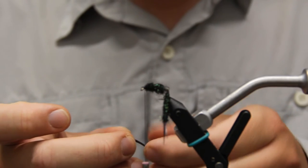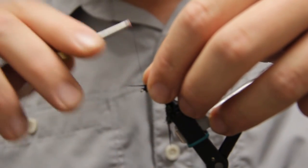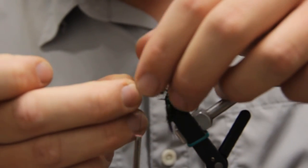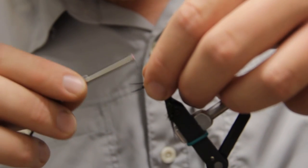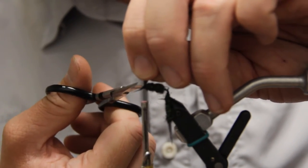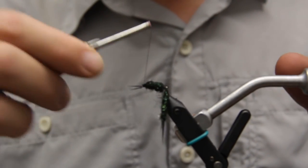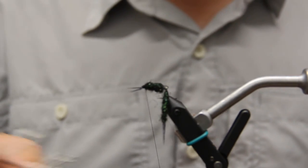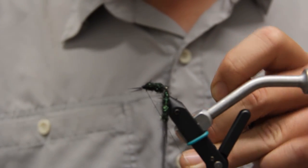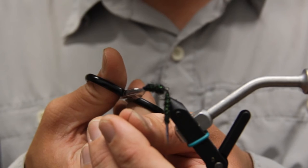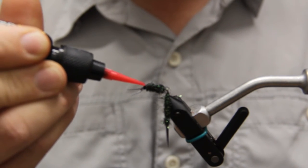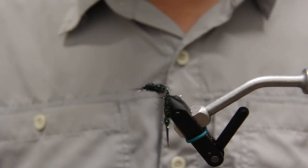Now, to finish it off, this is an optional thing. I'm going to take two biets. I'm going to tie them in as antenna. And these are facing forward. And I'm just going to whip finish over both. And I like to seal everything up with the Loon Flow. And hit it with your torch. And there you have it.